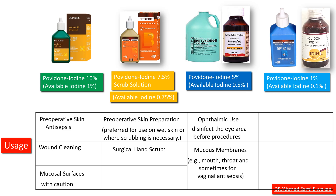Povidone iodine 1% is used as an antiseptic mouthwash or throat gargle to treat or prevent infections in the oral cavity and pharynx. It is occasionally used for wound irrigation, particularly for wounds in sensitive areas, because it's less irritating than higher concentrations.